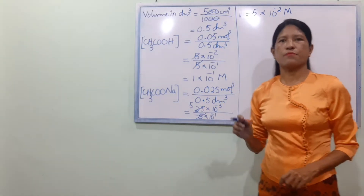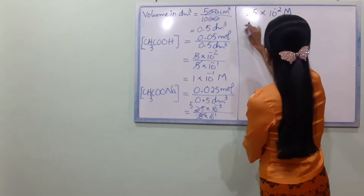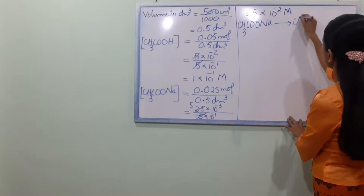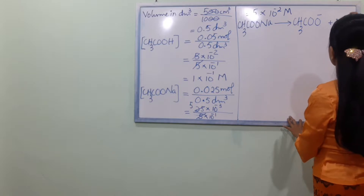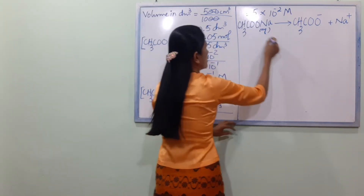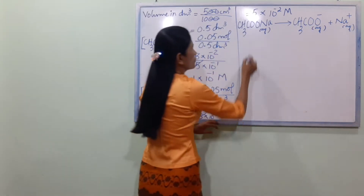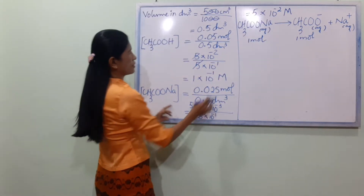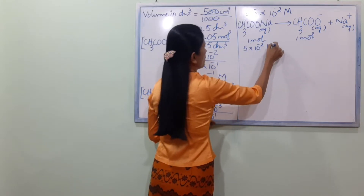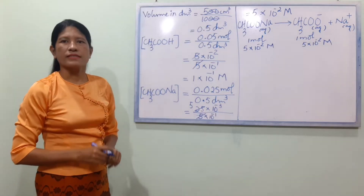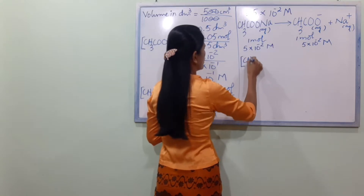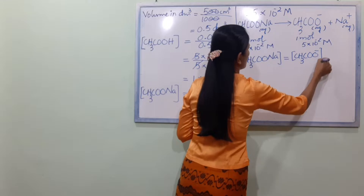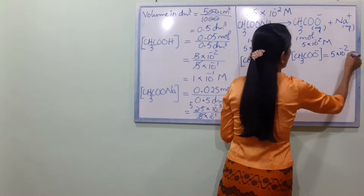Now we write the dissociation equation. CH₃COONa undergoes complete dissociation to give CH₃COO⁻ plus Na⁺. Since CH₃COONa completely dissociates, the concentration of CH₃COO⁻ equals 5 × 10 power minus 2 mol per dm³, the same as the sodium ethanoate concentration.